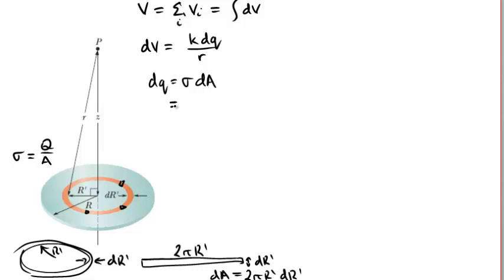So dQ here, our small element of charge, will be sigma times 2π r prime, dr prime.